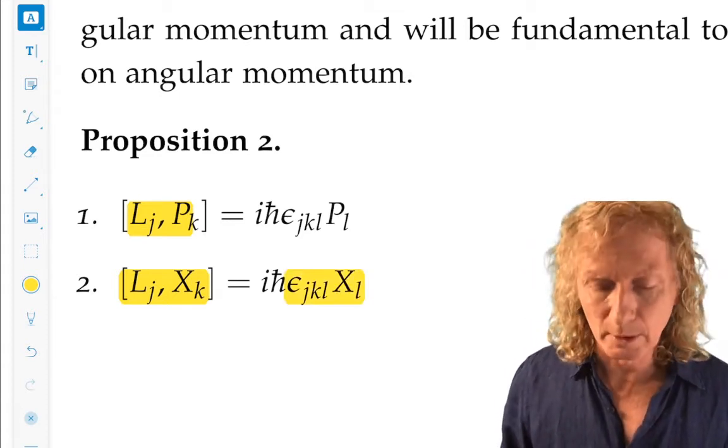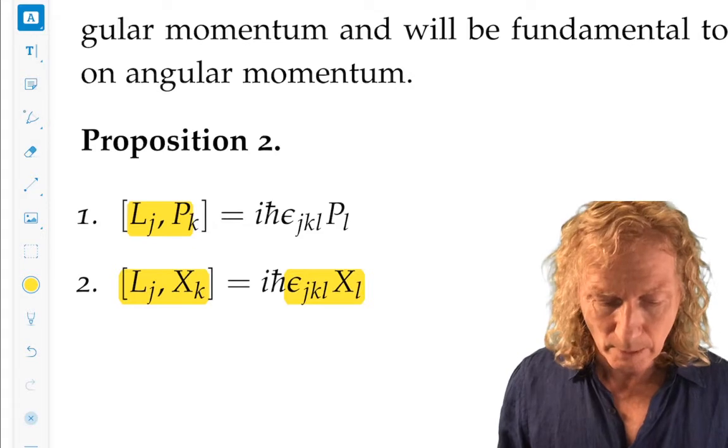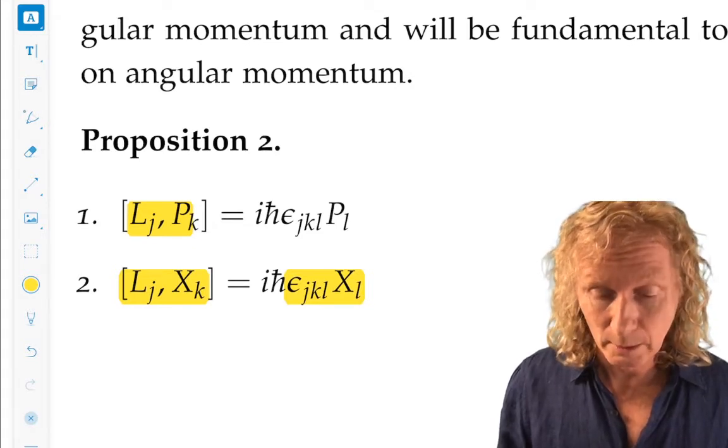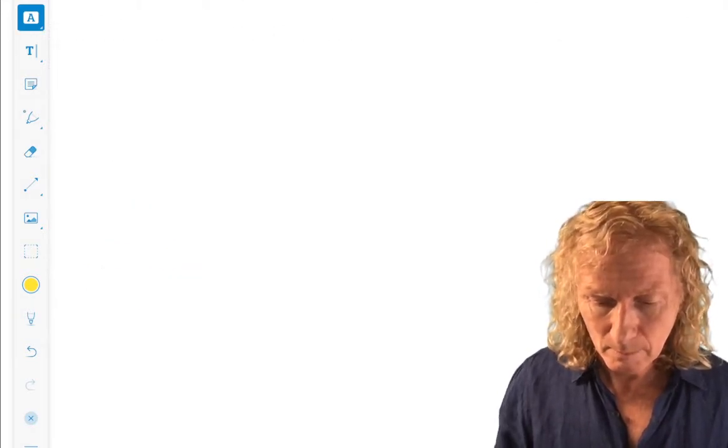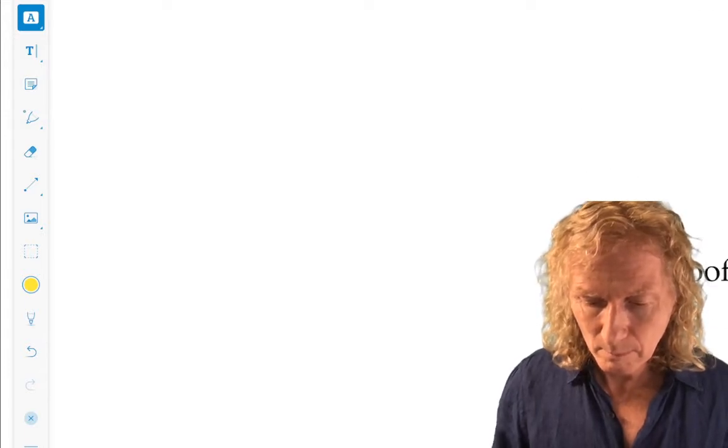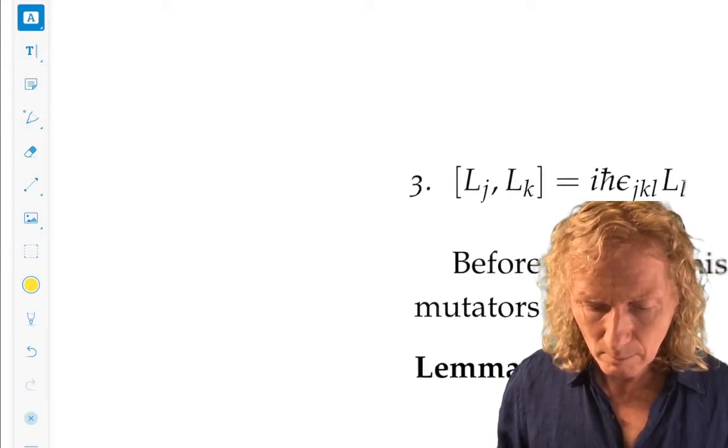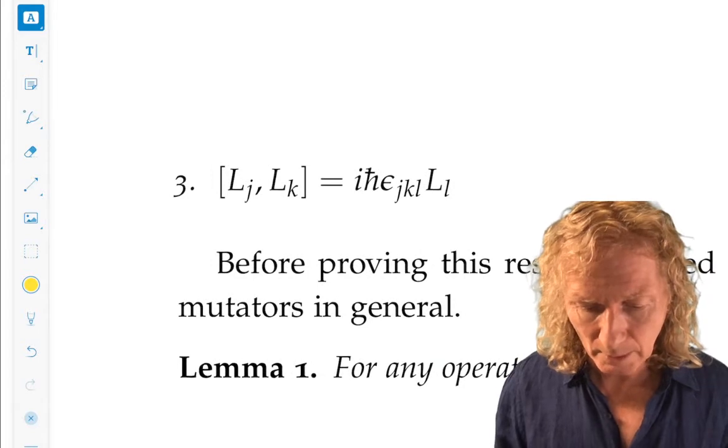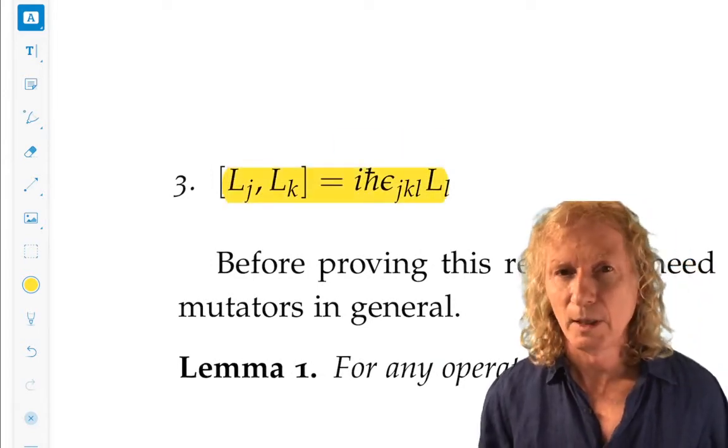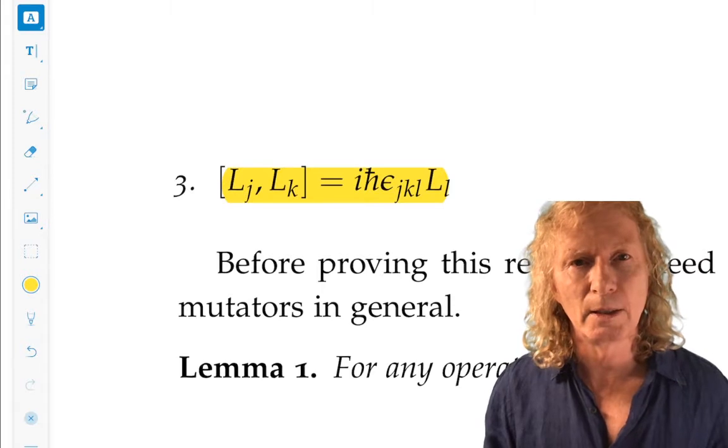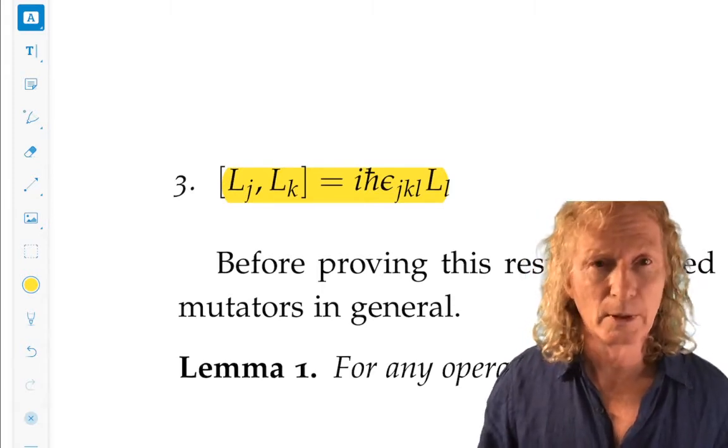And then finally, there's going to be a commutator of L_j with L_k. And yes, that's exactly what we have here. Same pattern. Stare at the pattern and understand it. It'll save you from mistakes later on.